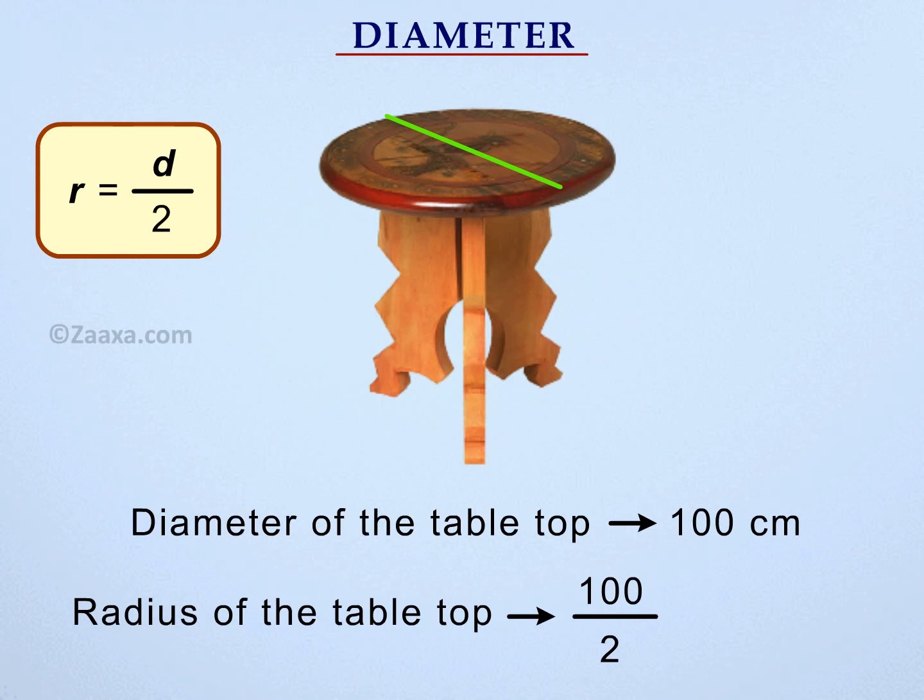Radius is equal to half the diameter. Therefore, the radius of the table top is 50 cm.